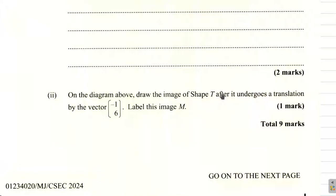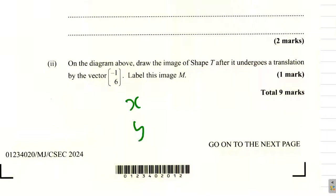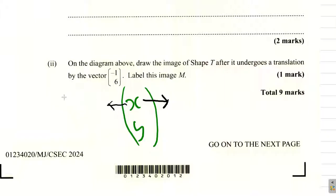Draw the shape of T after it undergoes a translation by this vector. When it comes to translation, it's in the form x, y. In this case, x is negative 1, y is 6. Remember, x is horizontal — if it is positive it goes to the right, if it's negative it goes to the left. This negative 1 means one unit to the left.